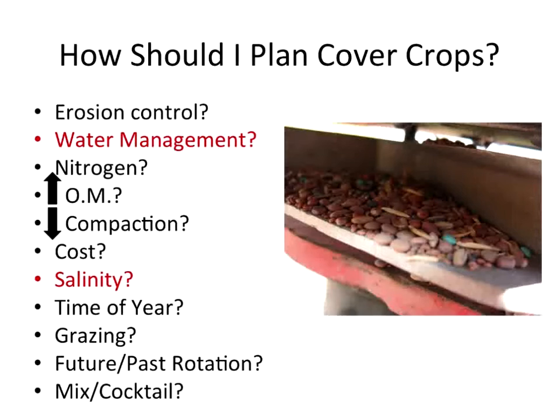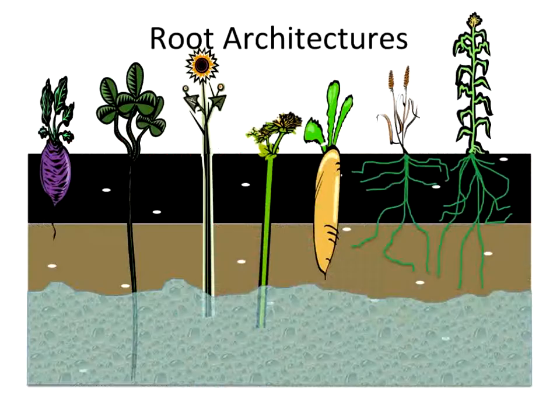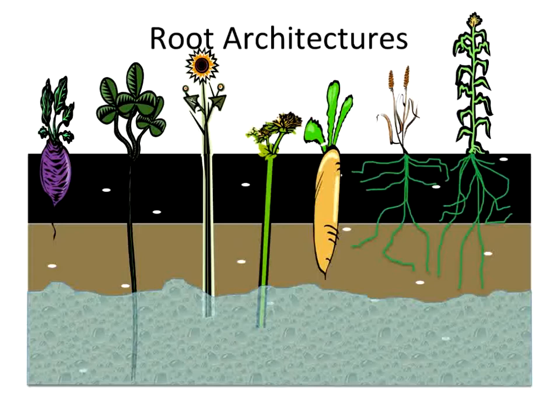One thing seen with brassica cover crops — like radishes and turnips — is that they lack mycorrhizal associations, and phosphorus issues the following growing season have been observed. If you include rye, barley, or something else with mycorrhizal associations in the mix, those phosphorus issues in the following season are usually avoided. Chris also recommends thinking about root architecture and mining the entire soil profile — not just the top six inches — using tap roots and fibrous roots at different depths down to three or four feet.